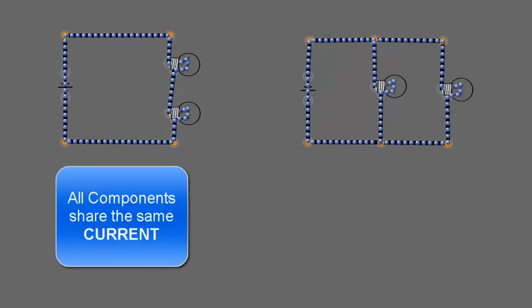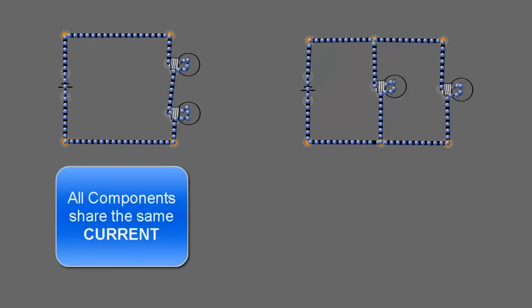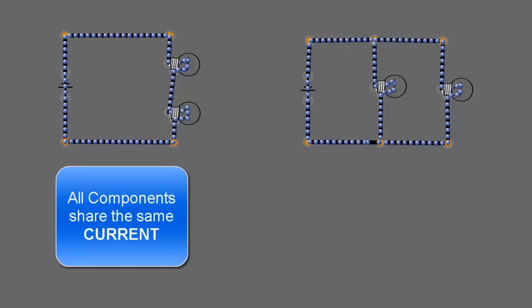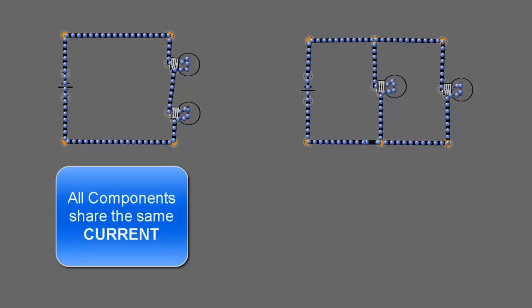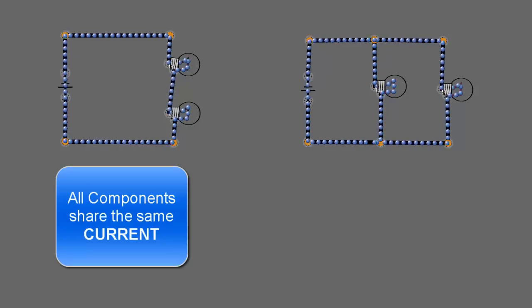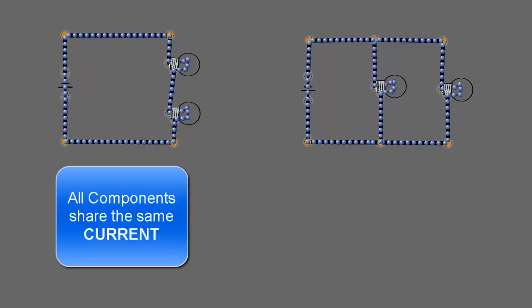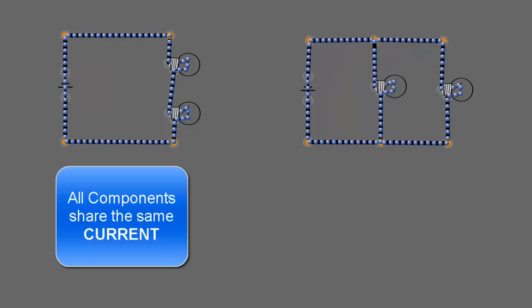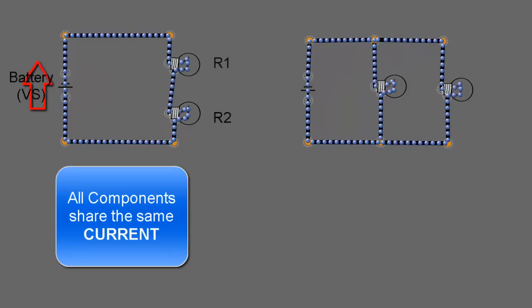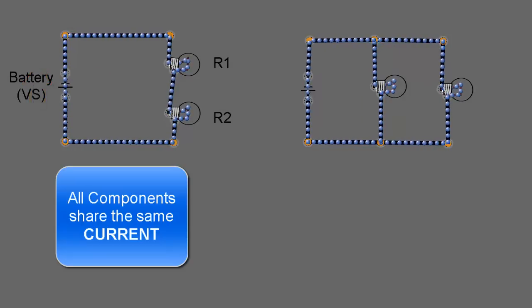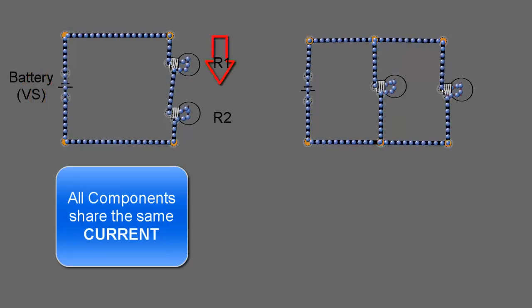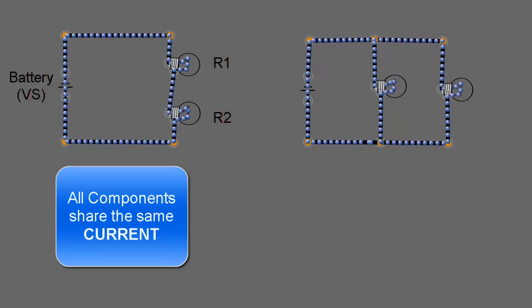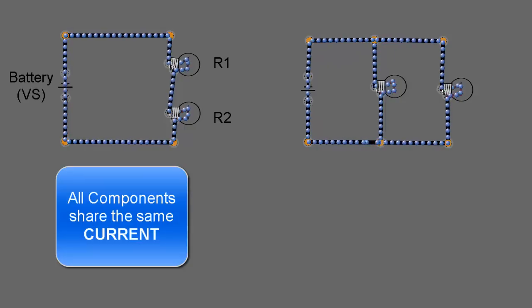In a series circuit, all the components share the same current. The current through the battery is the same current that flows through R1 and the same current that flows through R2, so all those currents are identical.